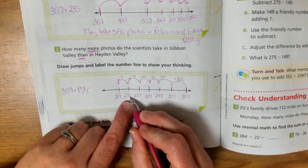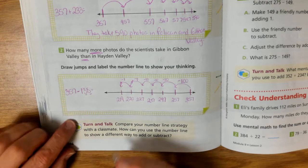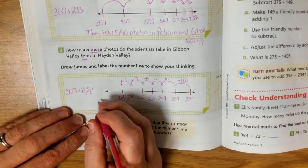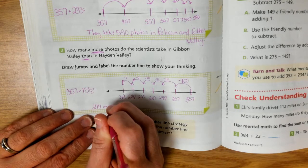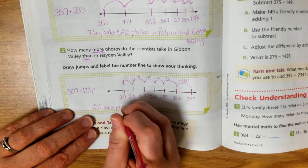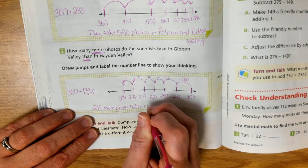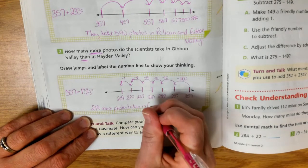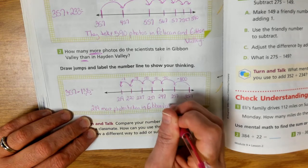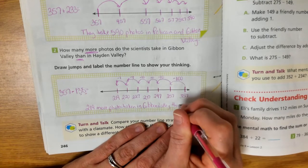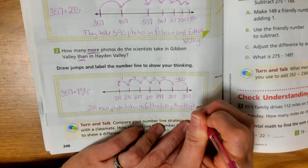So 357 minus 138 equals 219. So there are 219 more photos taken in Gibbon Valley than Hayden Valley.